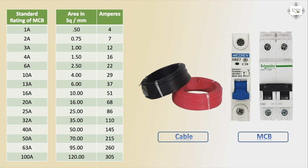Now let's calculate the standard cable sizes and their load capacities. Cable sizes available are: 0.50, 0.75, 1.00, 1.50, 2.50, 4, 6, 10, 16, 25, 35, 50, 95, 120 mm squared. The 0.50 mm sq cable carries 4 amperes, 0.75 mm sq carries 7 amperes, 1.00 mm sq carries 12 amperes, 1.50 mm sq carries 16 amperes, and 2.50 mm sq carries 22 amperes. Since our load is 10 amperes, we use the 1.00 mm squared cable, which has a 12 ampere capacity.